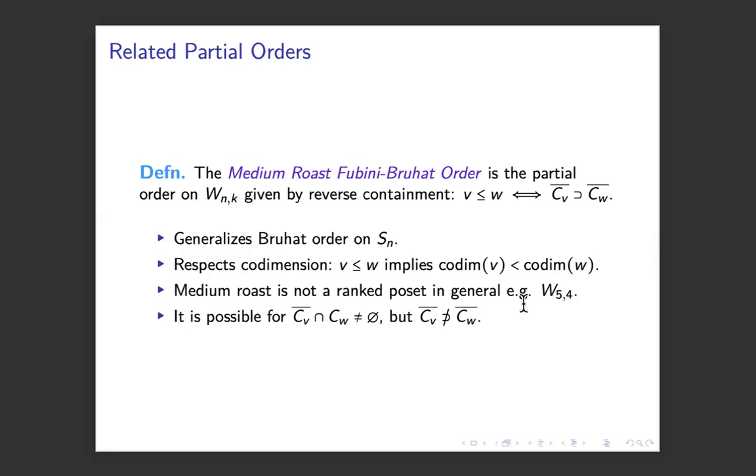The natural analog of Bruhat order here would be you write down a partial order where two Fubini words are related if and only if you have the corresponding reverse containment of PR varieties. V is less than or equal to W if and only if C_V contains C_W. We're going to call that the medium roast Fubini-Bruhat order. My collaborator Stark Ryan picked this name. Seattle has a lot of coffee drinkers, so this seemed to go along with it. It implies that we also have a couple other coffee-related partial orders coming up.